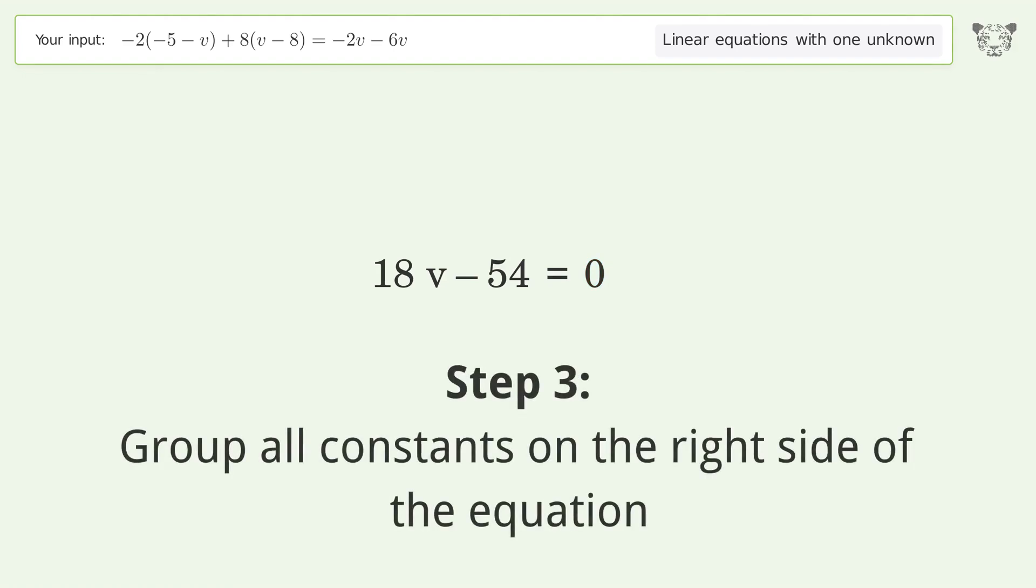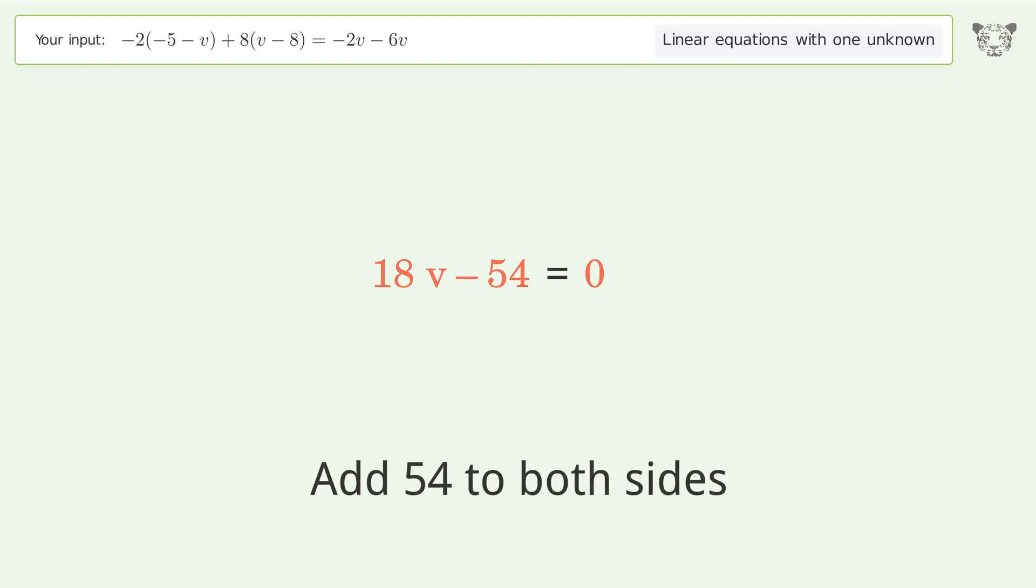Group all constants on the right side of the equation. Add 54 to both sides. Simplify the arithmetic.